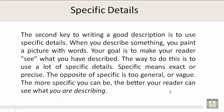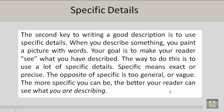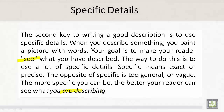The second key to writing a good description is to use specific details. When you describe something, you paint a picture with words. Your goal is to make your reader see what you have described. The way to do this is to use a lot of specific details. Specific means exact or precise. The opposite of specific is too general or vague. The more specific you can be, the better your reader can see what you are describing.